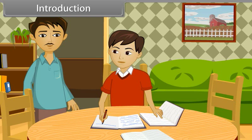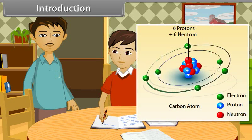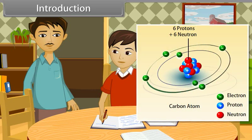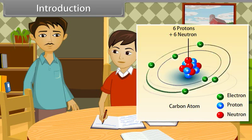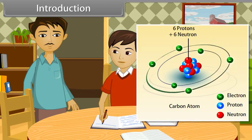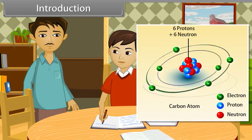Atoms join together to form a molecule. Atoms consist of electrons, protons and neutrons, and a central core called the nucleus. In this lesson, you will study the structure of the atom.